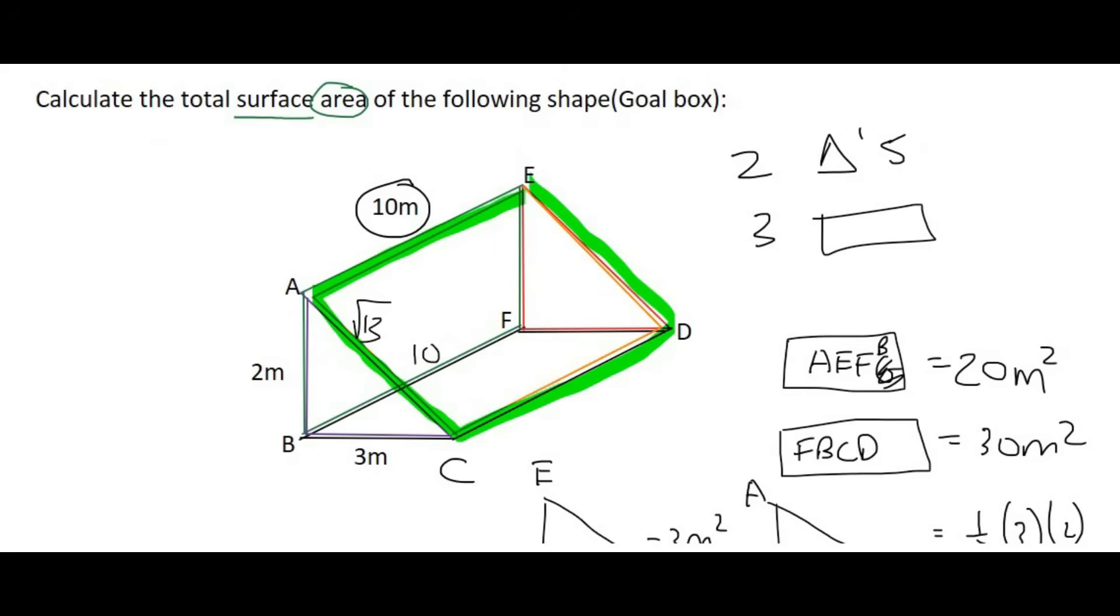And so now we can get the area of this shape over here, so that's going to be rectangle AECD. AECD is simply going to be equal to 10 times the square root of 13, and that's going to give you a value of 36.06 meters squared.